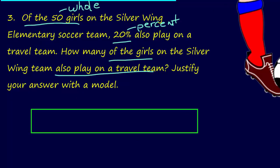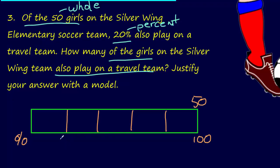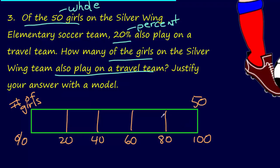Here's a tape diagram. Percent on the bottom, 100 over here. On top we put the number of girls. The whole is 50 girls at 100%. We're looking for 20%, so let's break the tape diagram into 20% sections: 20, 40, 60, 80, 100 — that's five equal sections. There are 50 girls across five equal sections, so that's 10 in each section. 10, 10, 10, 10, 10 — that makes 50. So 20% of 50 girls equals 10 girls.